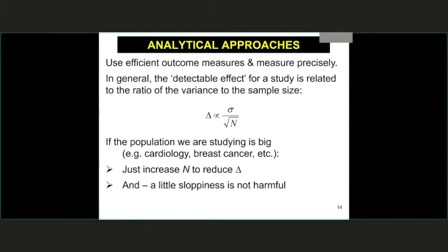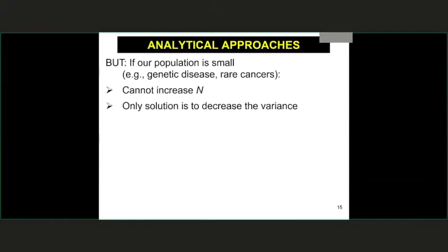One analytical approach is to use as efficient an outcome measure as possible and to measure precisely. We think of a detectable effect size as the ratio of the variance to the sample size needed to detect the effect. In a big setting, we can detect whatever effect we want by increasing sample size. In small or rare disease settings, that's not an option, so the only way to minimize that ratio is to decrease the variance by adjusting for confounders or things related to the outcome.